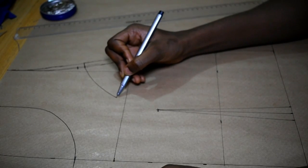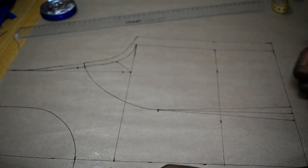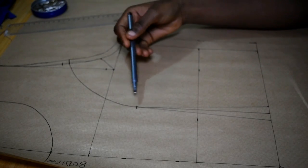So no dart manipulation for your back bodice - just draw the curve from armscye to that point, and then you cut your pattern out.